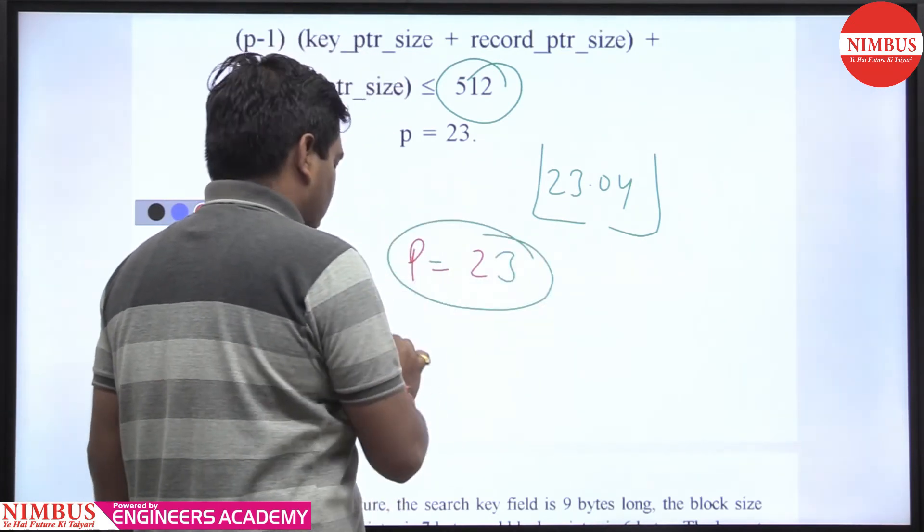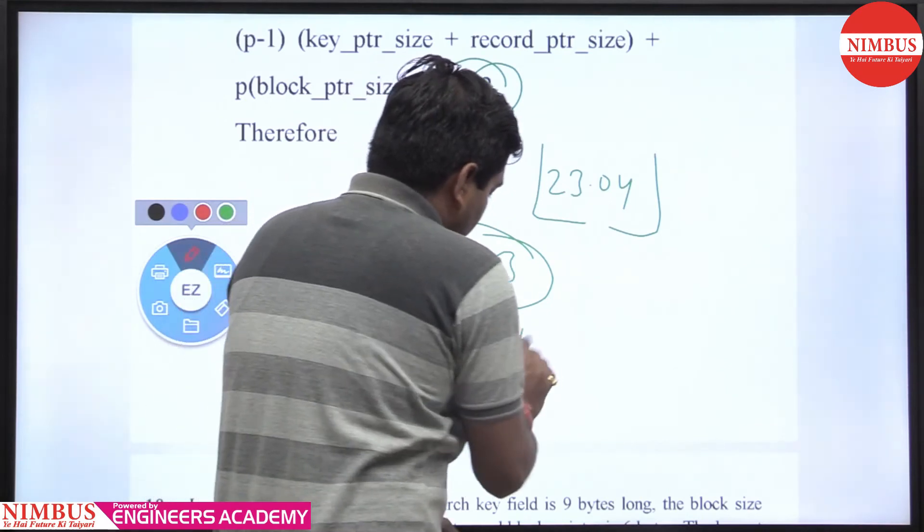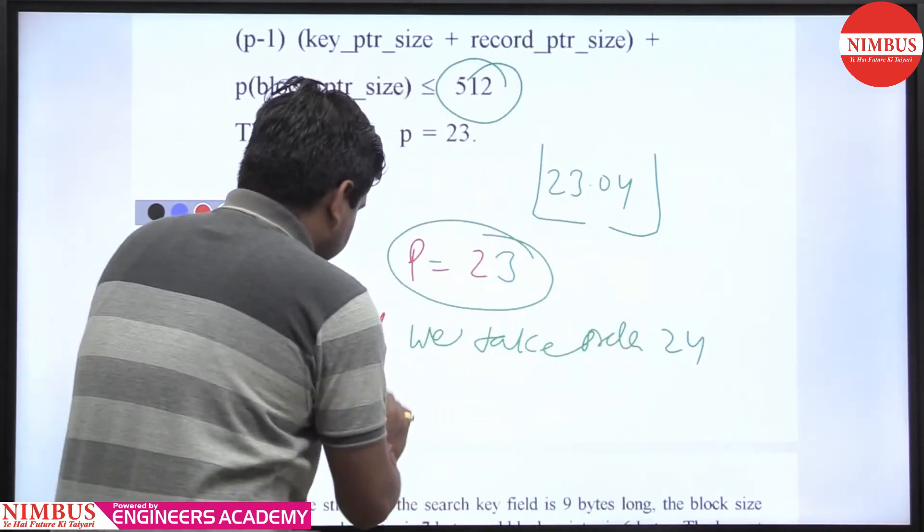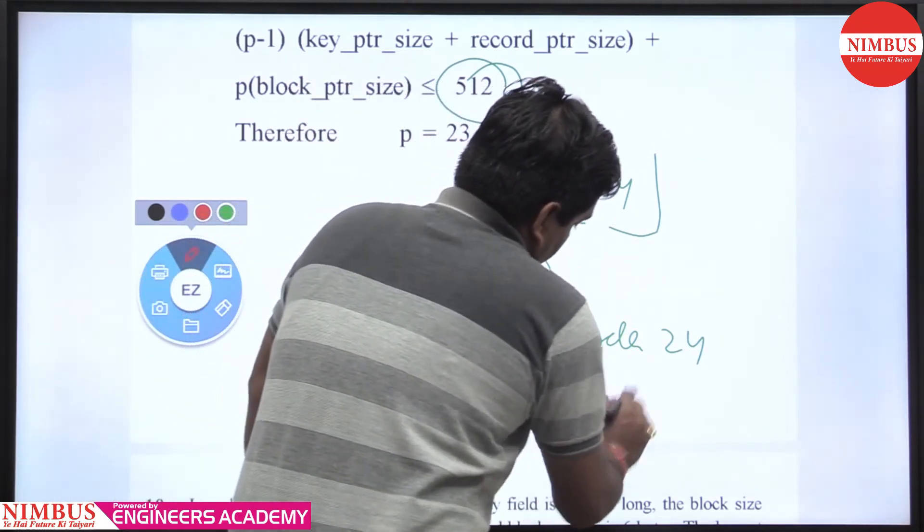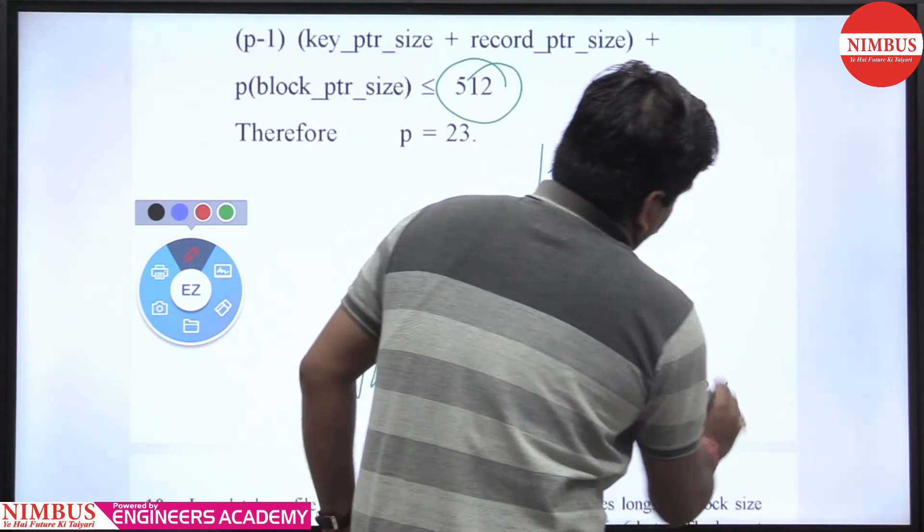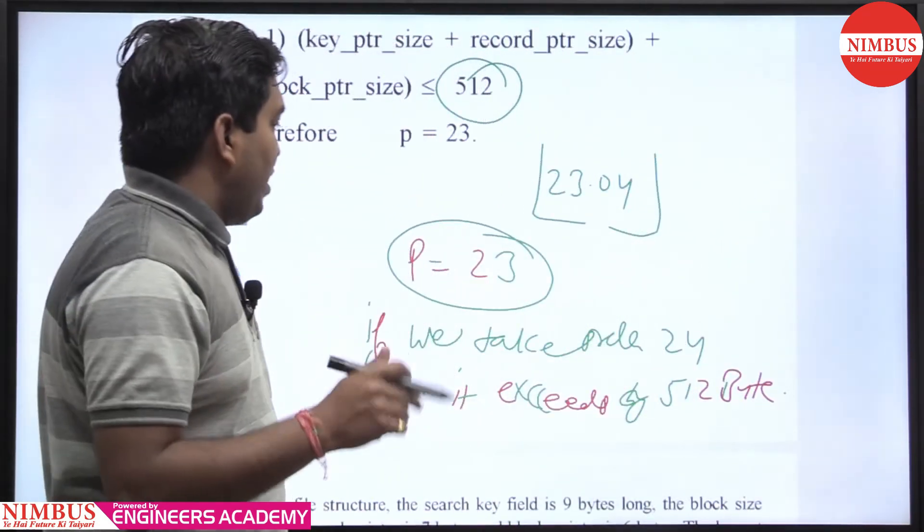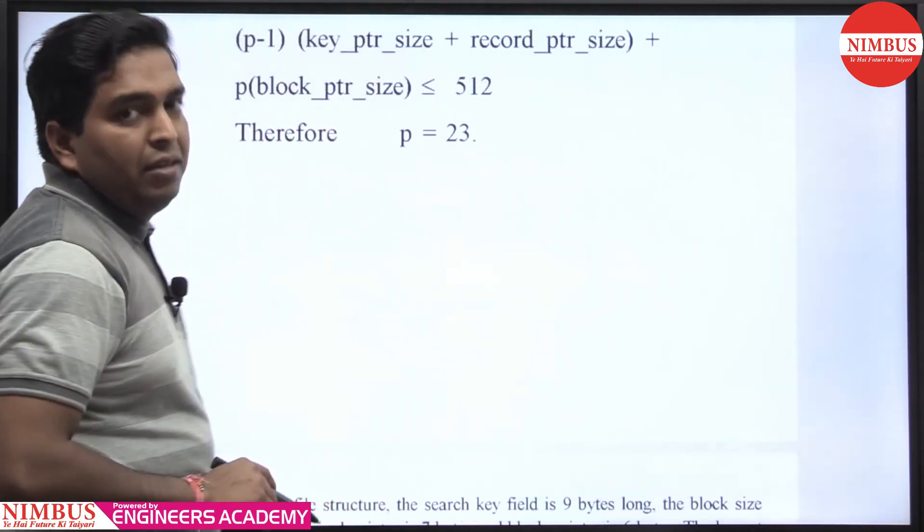So we take the order as 23. If we take order 24, then it exceeds 512 bytes. So that is not possible to accommodate in one block. That is why we are taking P equal to 23. Clear? Thank you.